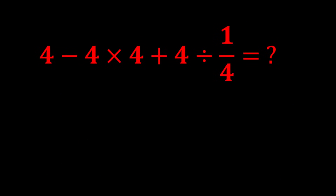Consider: negative 4 multiplied by 4 plus 4 divided by 1 over 4. In this expression, we have subtraction, multiplication, addition, and division. According to PEMDAS, multiplication and division have higher priority than addition and subtraction, so we perform multiplication and division first.